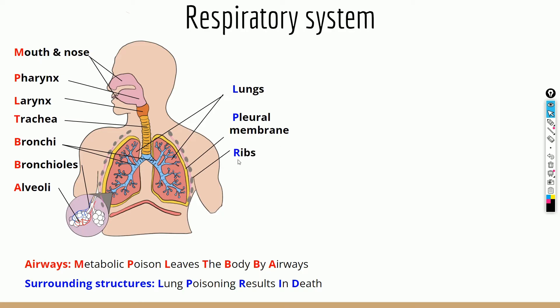R stands for the ribs, which play a very important function in inspiring and expiring air. The ribs are connected by the intercostal muscles, which contract and relax to change the position of the ribs. Finally, D stands for the diaphragm — a dome-shaped muscle that takes part in breathing by contracting and relaxing. When it contracts it flattens out, increasing the volume of the thoracic cavity; when it relaxes it returns to its dome shape, reducing the volume. This is a key part of inspiration and expiration.